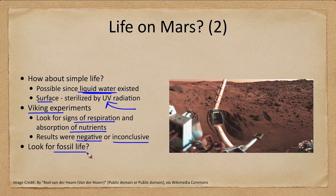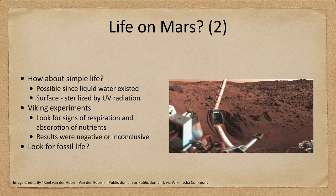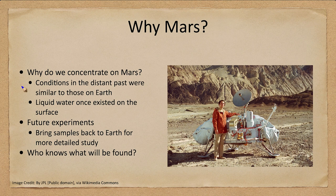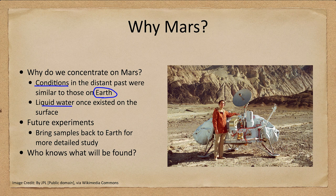How about fossilized life? We're looking for very simple creatures — not fossilized animals or complex plants, but signs of very small fossilized microbial organisms. Why focus on Mars? Because conditions in the distant past were similar to what we have on Earth — liquid water once existed on the surface. This makes Mars really the most Earth-like planet in terms of looking for life. Later we'll consider moons in the outer solar system, but Mars is probably the best bet right now to find current simple life or evidence of past life.